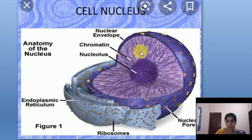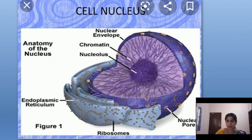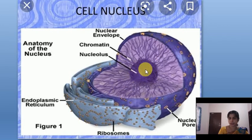The chromatin material consists of thread-like structures — an intertwined mass of chromosomes. It is composed of genetic substances: DNA, RNA, and proteins. DNA stands for deoxyribonucleic acid. In a dividing cell, the DNA is highly condensed into thread-like structures known as chromosomes. At other times, it is spread throughout the nucleus as chromatin.